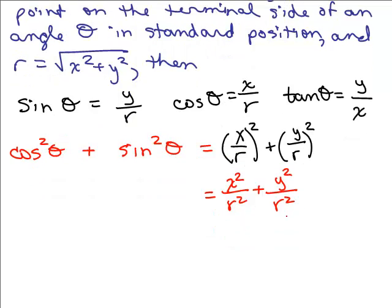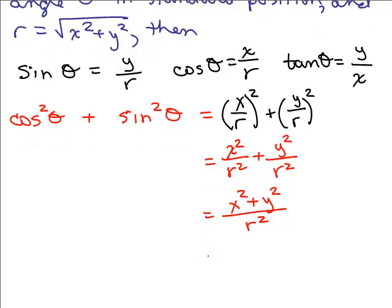And now you have a common denominator so I could just write x squared plus y squared in the numerator all over r squared, which is, well, what is x squared plus y squared? Now, if you go back up to this, right here, let's see. Remember where that came from.